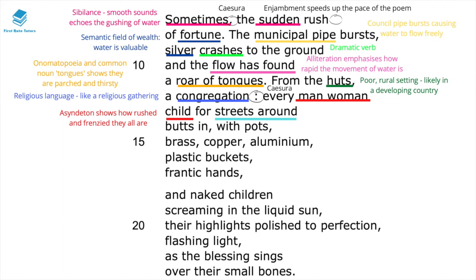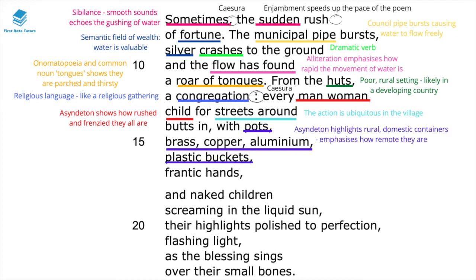The phrase 'for streets around' shows that going to fetch this water is ubiquitous throughout the whole village. In lines 14, 15 and 16 there's asyndeton again — pots, brass, copper, aluminium, plastic buckets — and this once more highlights the rural domestic containers these people use, emphasising both how remote they are and how impoverished they are.